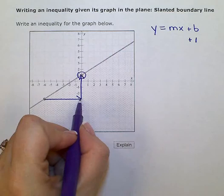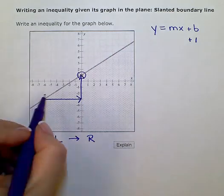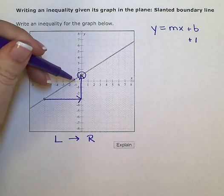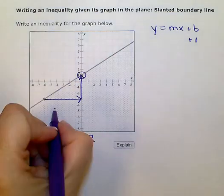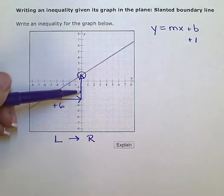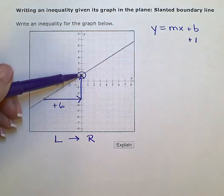And to get between the two points, I would have to go 1, 2, 3, 4, 5, 6 units over. And I would have to go 1, 2, 3, 4 units up.